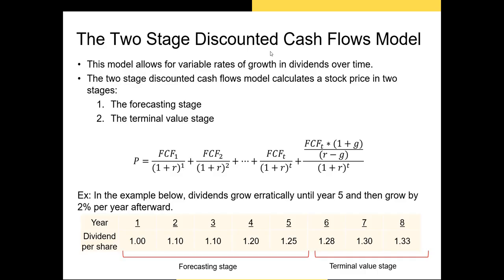Now let's discuss the variable growth models — the ones where we allow cash flows to adjust in the future. One of the most popular forms is the two-stage discounted cash flows model. We break the future into two periods: a forecasting period where we directly adjust the cash flows, and a terminal value period where we use the Gordon growth model to estimate the value of remaining cash flows. Since it's easier to estimate cash flows over the next two to five years, after about year five we assume cash flows grow at a constant long-term growth rate.